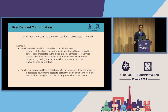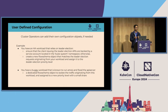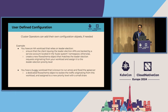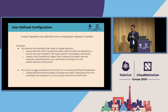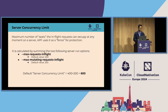Cluster operators can add their own configurations if needed. For example, if you have a buggy workload known to run amok and flood the API server, you can define a dedicated flow schema that matches requests from your workload and assign it to a priority level with a small concurrency share.